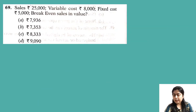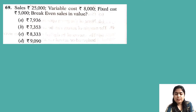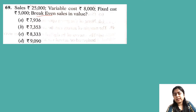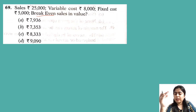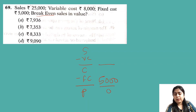Next question: Sales is 25,000, variable cost is 8,000, fixed cost is 5,000. Calculate break-even sales in value. At break-even point profits are zero. Sales minus variable cost: 25,000 minus 8,000 gives contribution of rupees 17,000.